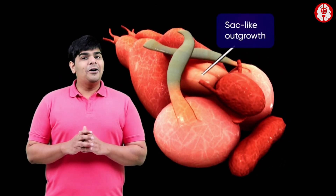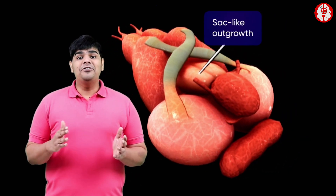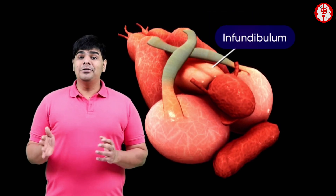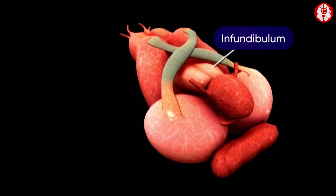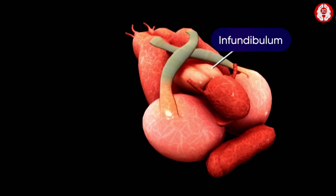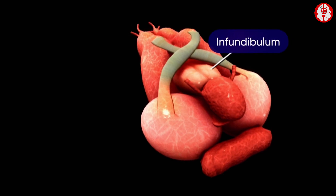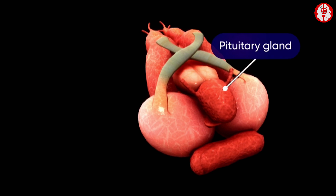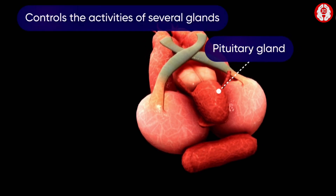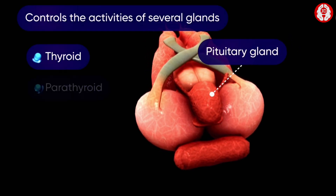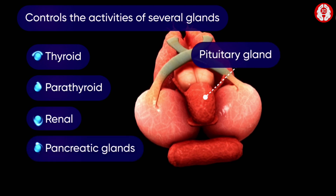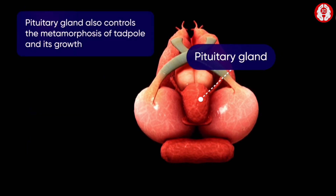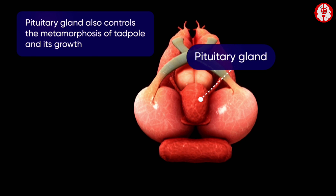A hollow conical sac-like outgrowth is seen projecting from the ventral wall of the diencephalon, called the infundibulum. The posterior, broader end of the infundibulum is attached to a hemispherical endocrine gland called the pituitary gland. The pituitary gland controls the activities of several glands like thyroid, parathyroid, renal, and pancreatic glands, and also controls the metamorphosis of tadpoles and their growth.